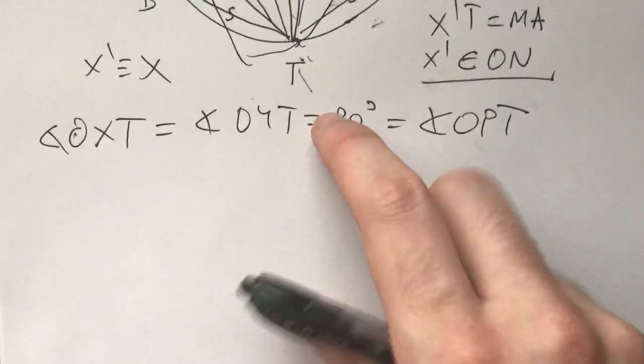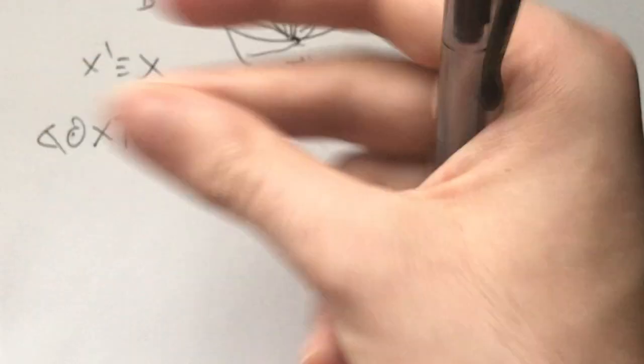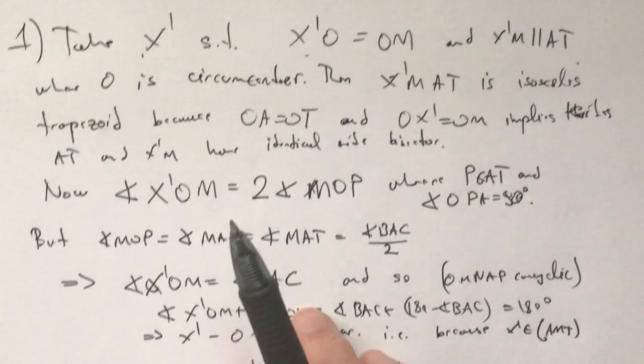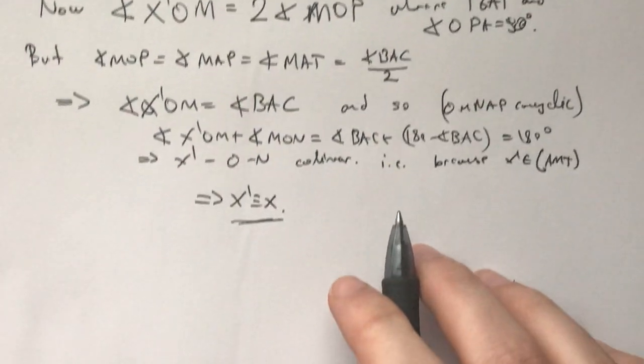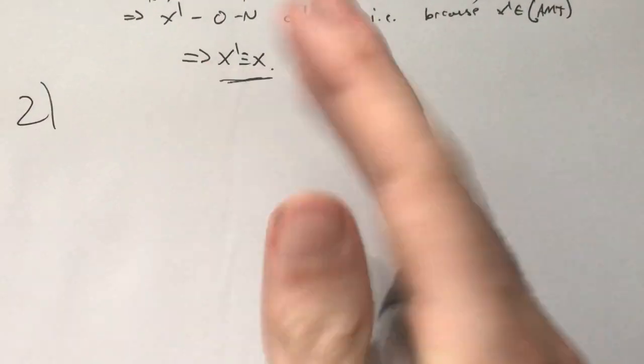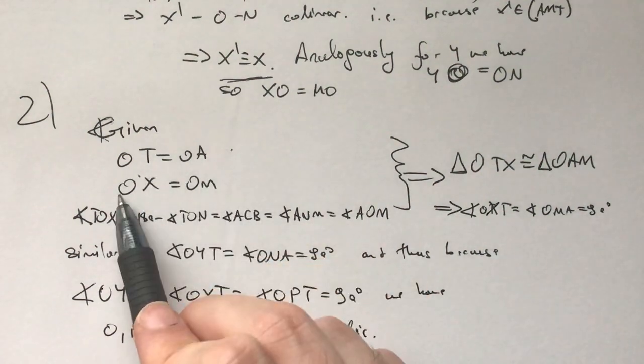And now, let's take 15, 10 minutes and try to write up a solution. So the first thing we do is we say take X prime to have these two properties. And then we get that X prime is in fact X. And we do analogously for Y. And then we move on to our second claim.